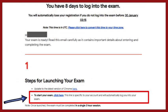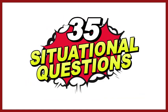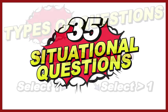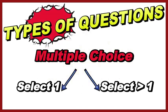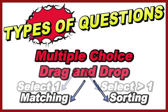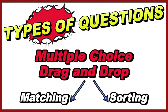Once ready to take the exam, simply click the link on the email. You will be directed to a new page where you are going to answer the 35 situational questions. There are multiple choice questions that may require you to choose the best option or multiple options, so you have to read the instructions carefully. Another type of question is drag and drop — like matching type questions — where you may also encounter classifying options to their correct category.